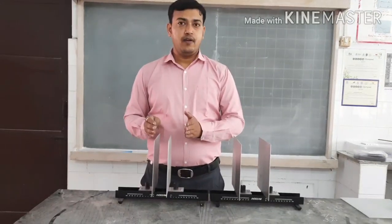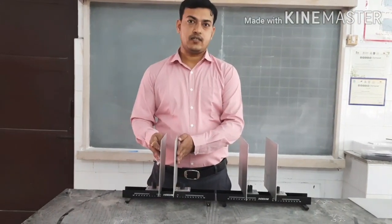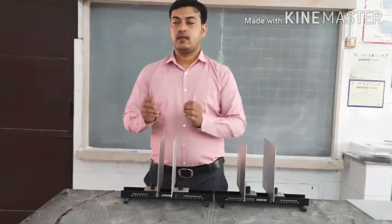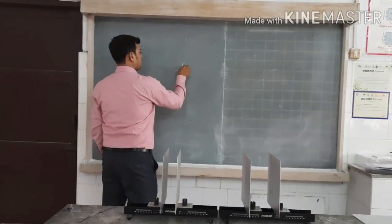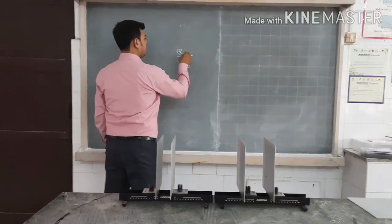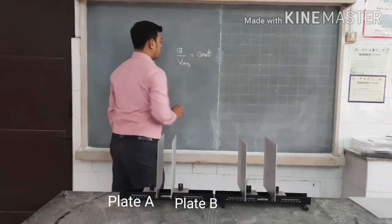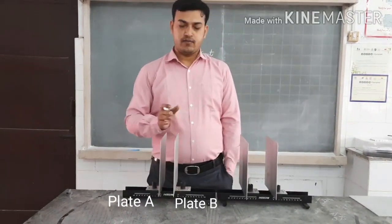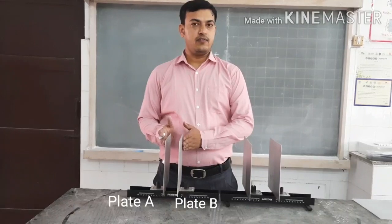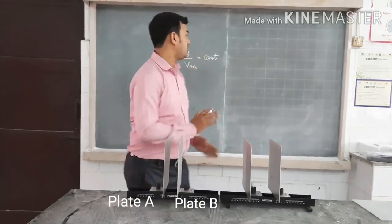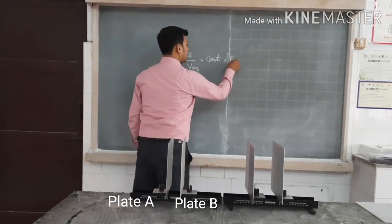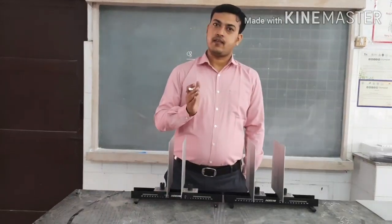If I double the amount of charge, the field will increase and the potential difference will also increase. But the ratio of charge to the potential difference between the plates remains constant for any amount of charge given to the plates. So if you increase the charge, the electric field increases, the potential difference increases, but the ratio of charge to potential difference remains constant. This constant is called the capacitance of the capacitor.